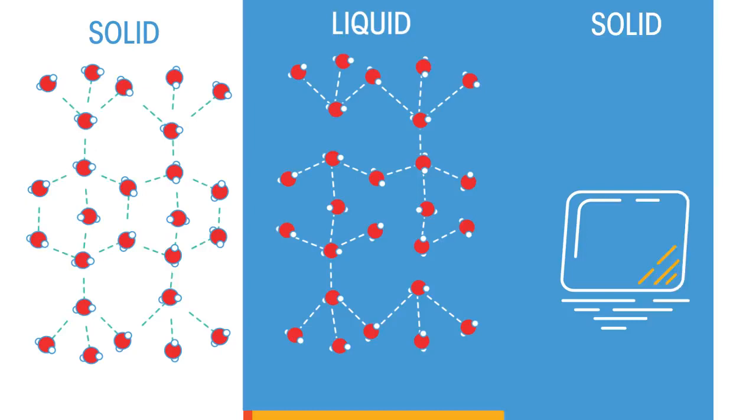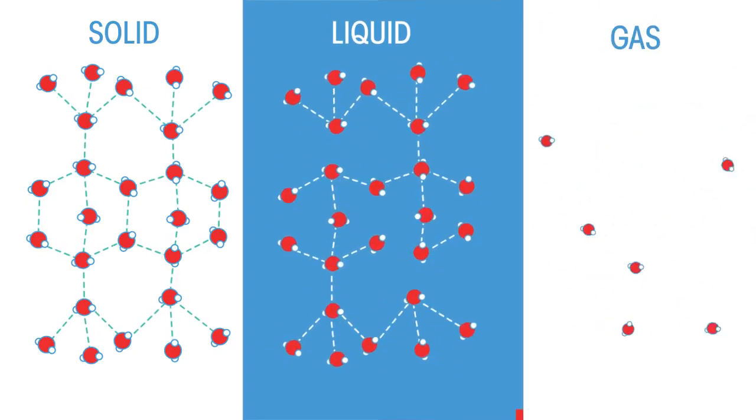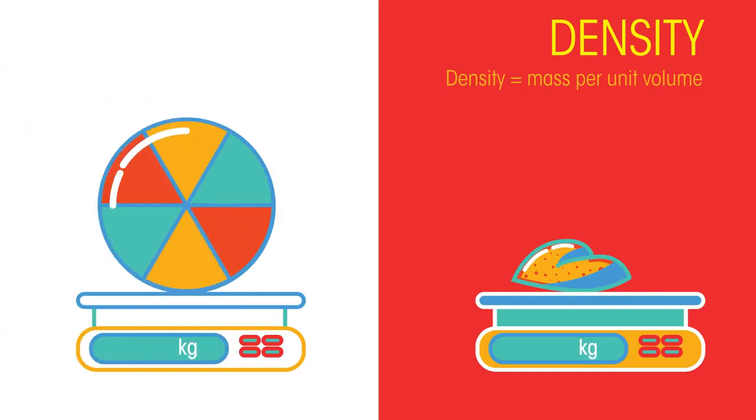Informally, density is a measure of how packed a material is with mass. Density is defined as the mass of an object per its unit volume.